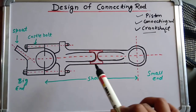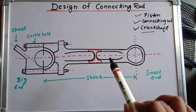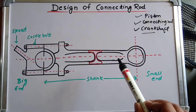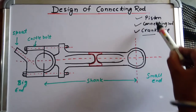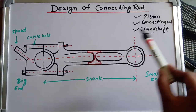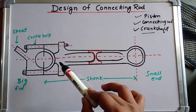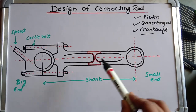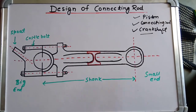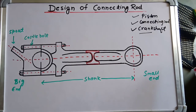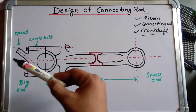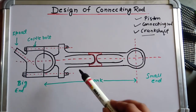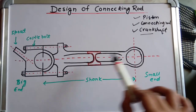The connecting rod is the intermediate member between the piston and the crankshaft. It is connected on one side to the piston and on the other side to the crankshaft.